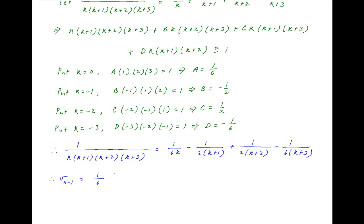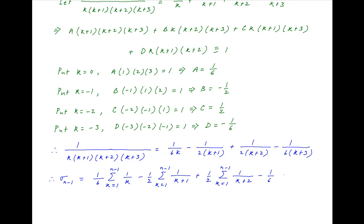Therefore 1/[k(k+1)(k+2)(k+3)] can be expressed as 1/(6k) − 1/[2(k+1)] + 1/[2(k+2)] − 1/[6(k+3)]. Using this result in the expression for σ(n−1), we get σ(n−1) = (1/6)·Σ(1/k) − (1/2)·Σ(1/(k+1)) + (1/2)·Σ(1/(k+2)) − (1/6)·Σ(1/(k+3)), where all summations run from k=1 to n−1.